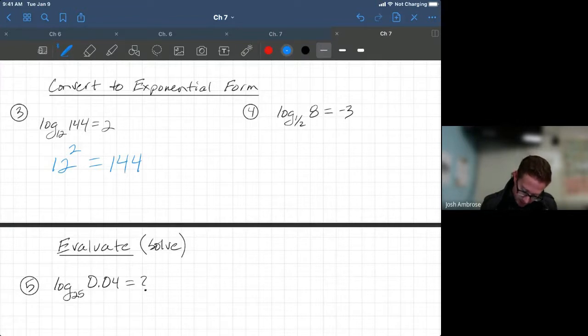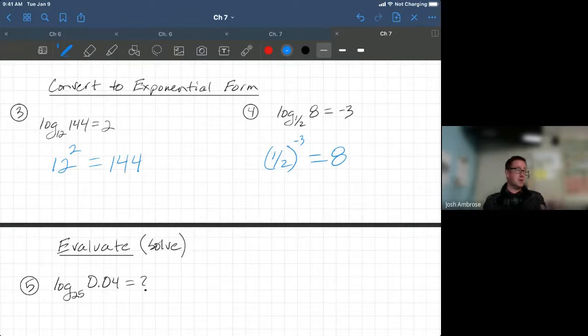This one right here, kind of a weird one, but the pattern doesn't change. One half to the negative third power equals eight. All they want you to do is change the form. You're not solving anything. You're just changing the format.